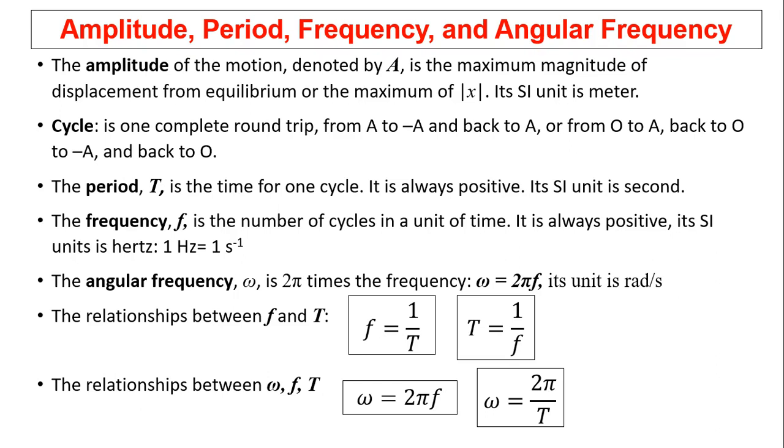The angular frequency omega is 2π times the frequency. Omega equals 2πf. Its unit is radian per second, same as angular speed.